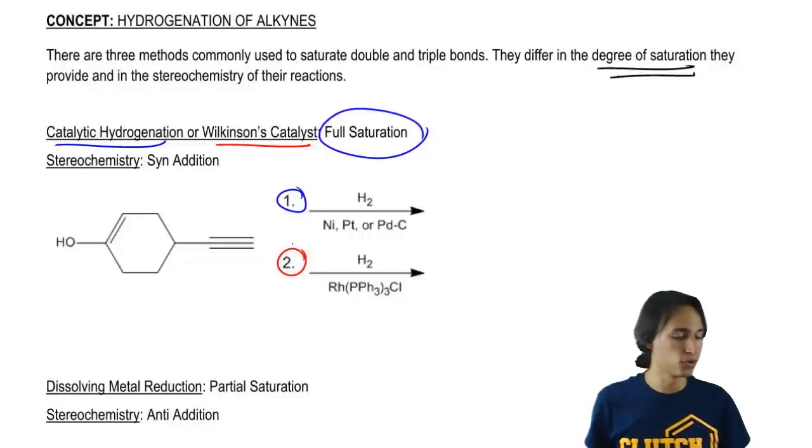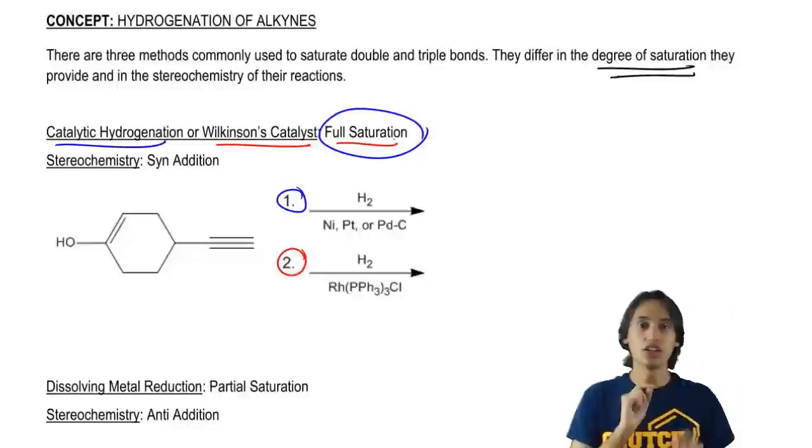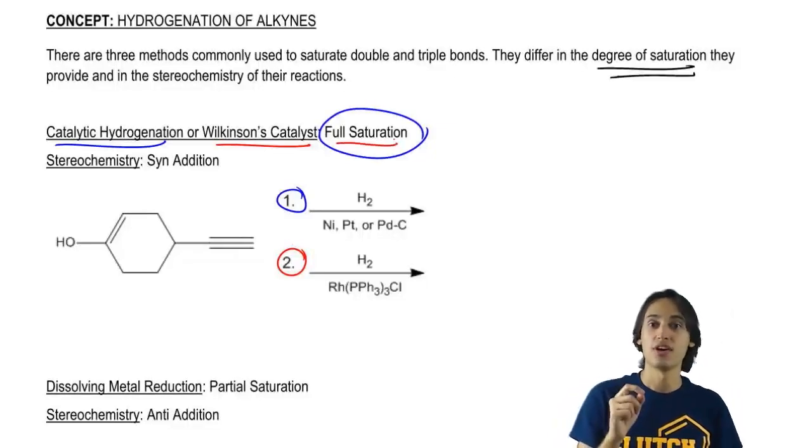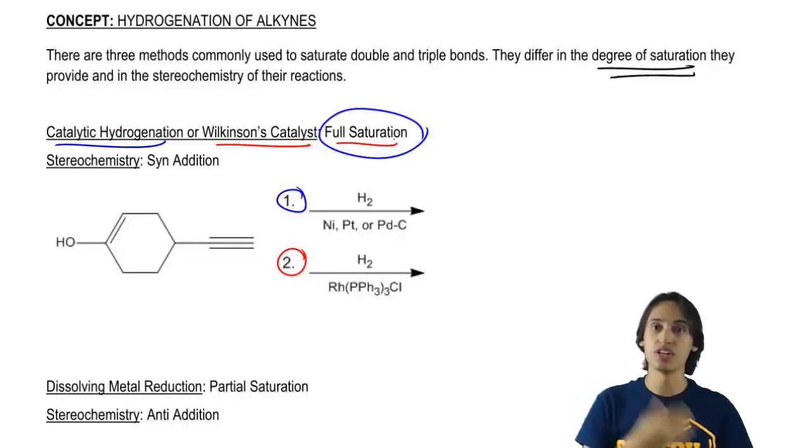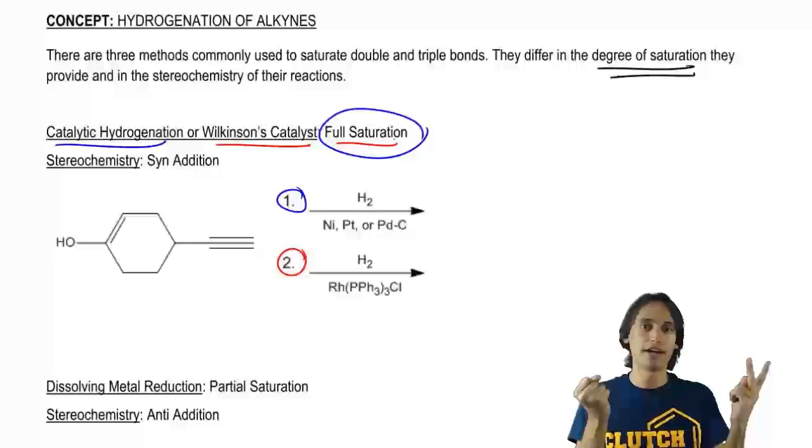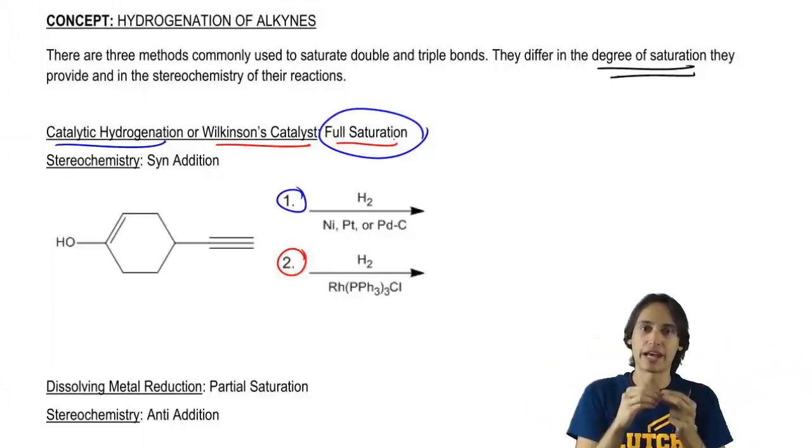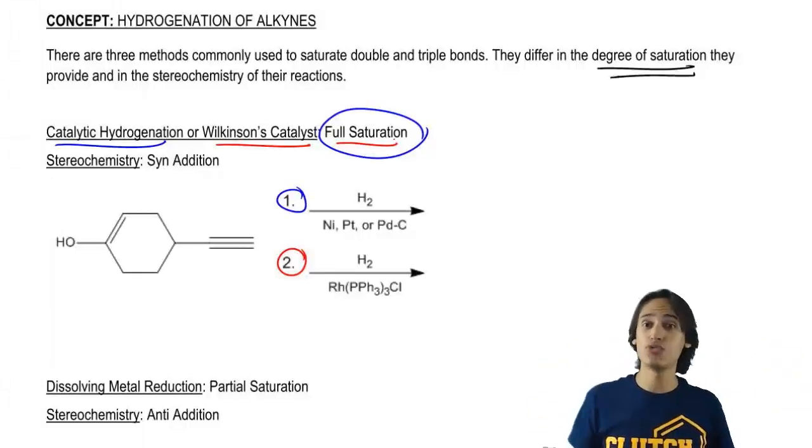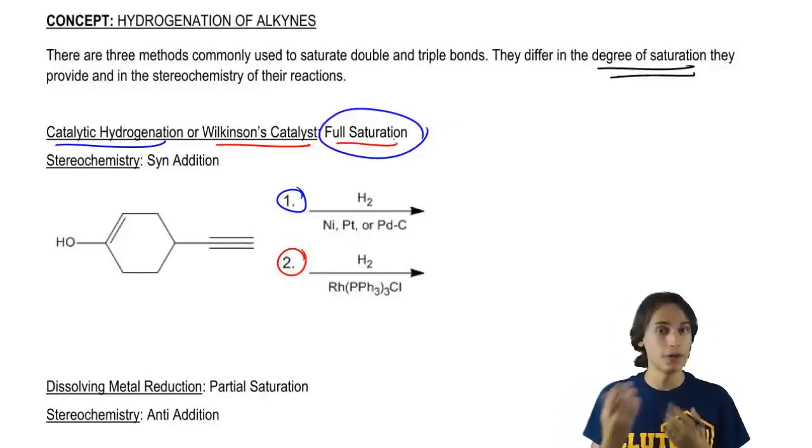Now, full saturation is a little bit of a misnomer because remember that rings also count towards unsaturation. A ring is missing two hydrogens because two ends are attached to each other. And actually, these reactions do nothing to rings. So all the double bonds and triple bonds will be gone, but the rings will stay intact.